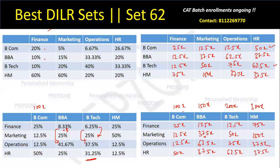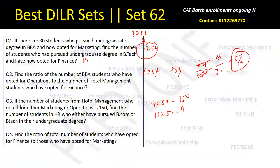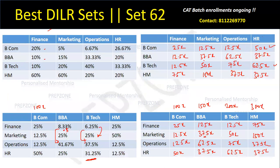I will leave the remaining calculations as homework for everyone. I want all of you to find the value and tell me whether you were able to solve it. Next question: find the ratio of total number of students who opted for Finance to those who opted for Marketing — Finance versus Marketing.